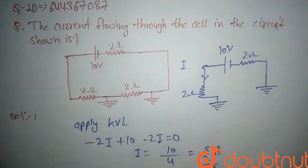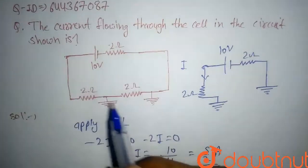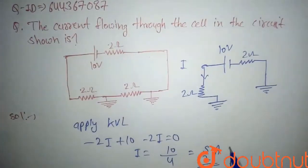5 by 2 amperes. So this will be the current in this circuit, and this will be our final answer. I hope you have understood. Thank you.